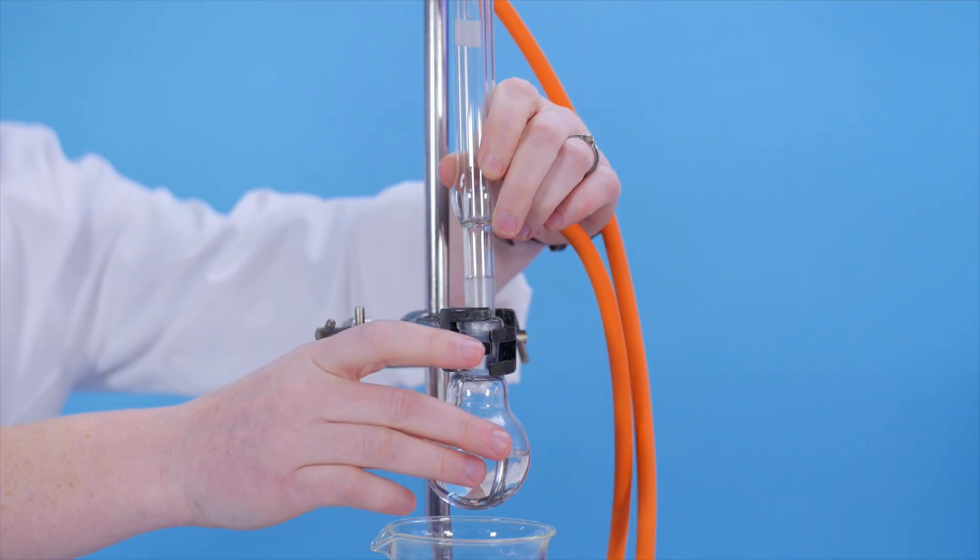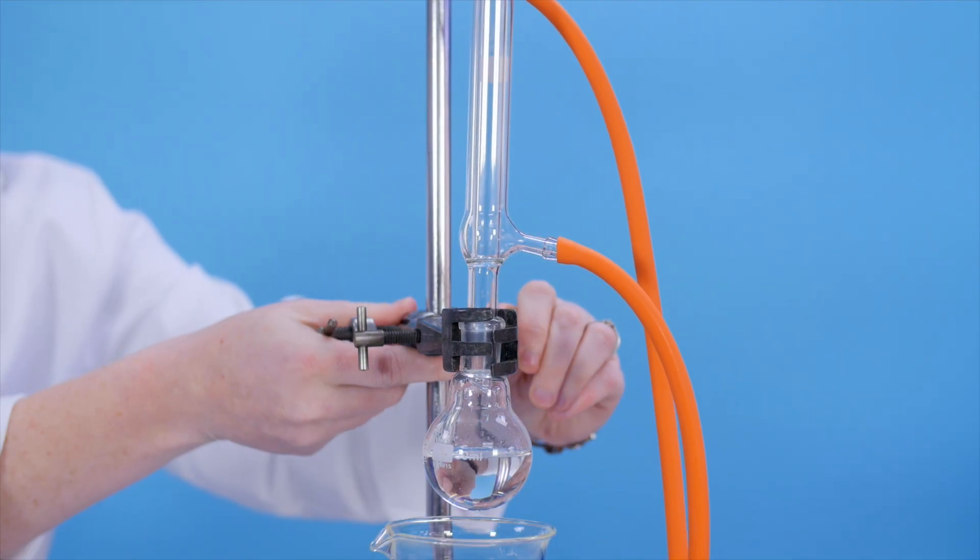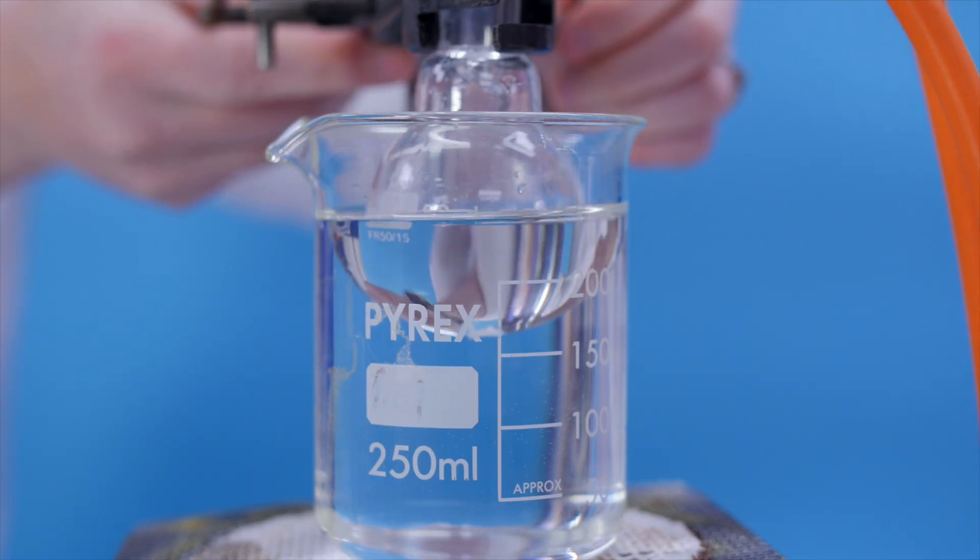Fit a condenser to stop any vapours escaping. Then heat the mixture in the flask to 70 degrees Celsius in a water bath.